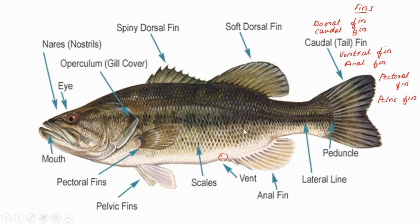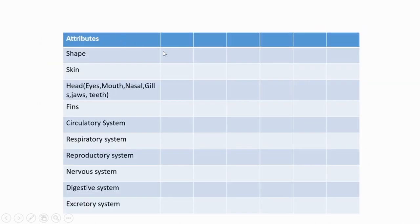We have now understood some basic features of fishes necessary to distinguish one species from another. Next I am going to show you a table. You also have to prepare this table — it will help you learn all the features of all different classes and subclasses of fishes clearly without getting confused.